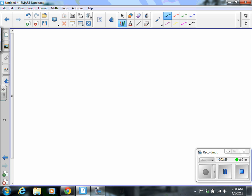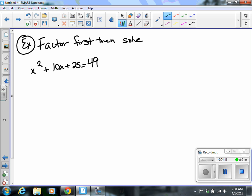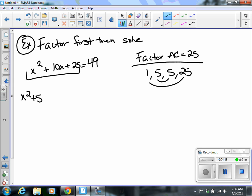Sometimes you may have to factor first and then solve. So for instance, if I were to have x squared plus 10x plus 25 equals 49, I'm going to have to factor this left side. And we talked about factoring already, so we're going to factor the ac, which in our case is 25. The factors of 25 are 1, 5, and 25. I'm going to regroup this. 1 and 25 don't give me the 10, but the 5 and the 5 do. So I have x squared plus 5x plus 5x plus 25 equals 49.